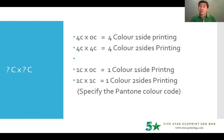We come to 4C x 0C and 4C x 4C. What's the difference? In fact, quite simple. 4C x 0C stands for four color printing one side, and 4C x 4C means both sides with four color printing.